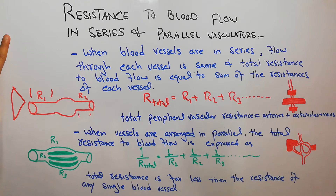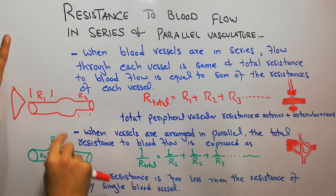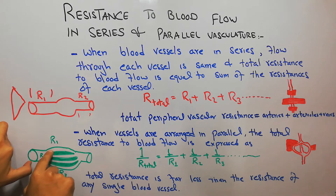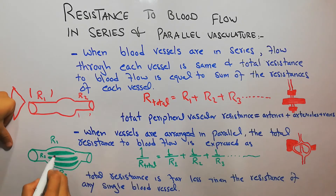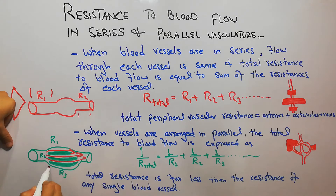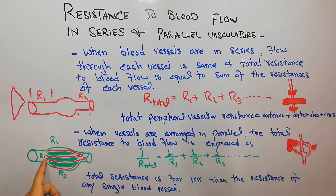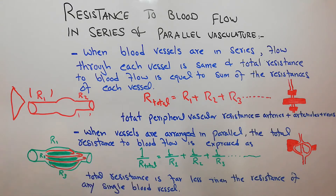Looking at this diagram, when we compare the series arrangement with the parallel arrangement, we see that when blood arrives at the parallel section, it gets divided into four different vessels. Some blood flows through the first part, some through the second, some through the third. The total resistance expressed as 1 over R_total is far, far less than the resistance of any single blood vessel.